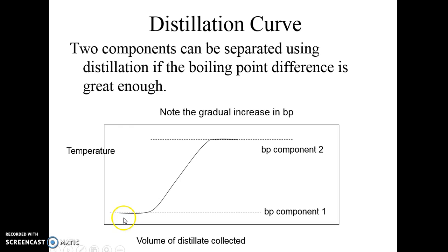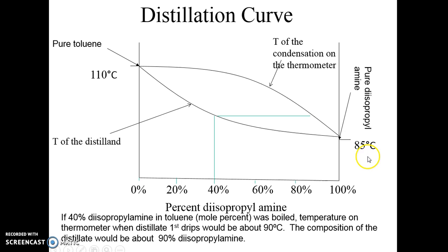This separation is ideal in theory. Normally there's some slope to these lines when we do it in the lab. But if the boiling points are far enough apart, we can still separate them, and there is a distillation curve we use to analyze the temperature and composition.